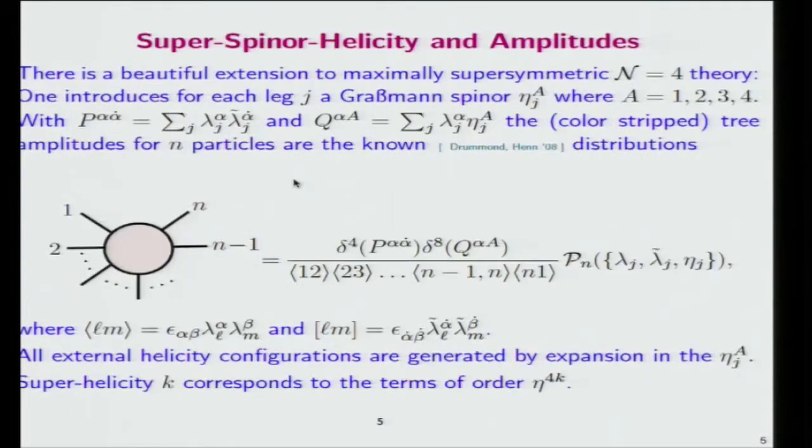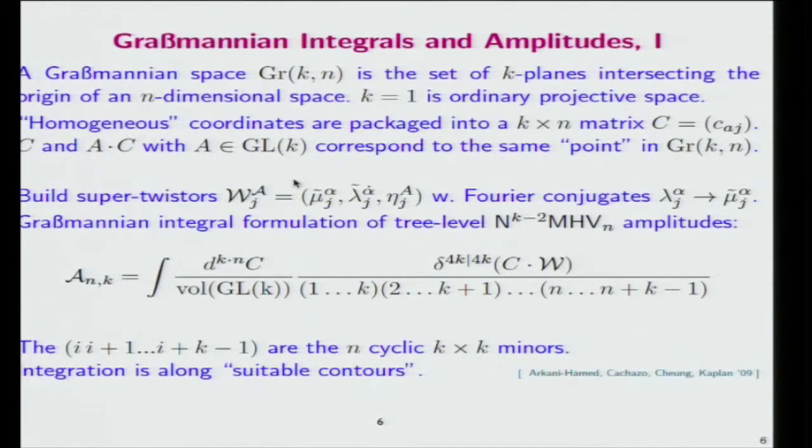You have a delta function which encodes the external kinematics. The points are k by n matrices. The weight down here is just all the cyclic k by k minors of this k by n matrix. For MHV, you just saturate the delta function, you are done. For non-MHV, you have to say a bit more, you have to choose the right contours to get it.